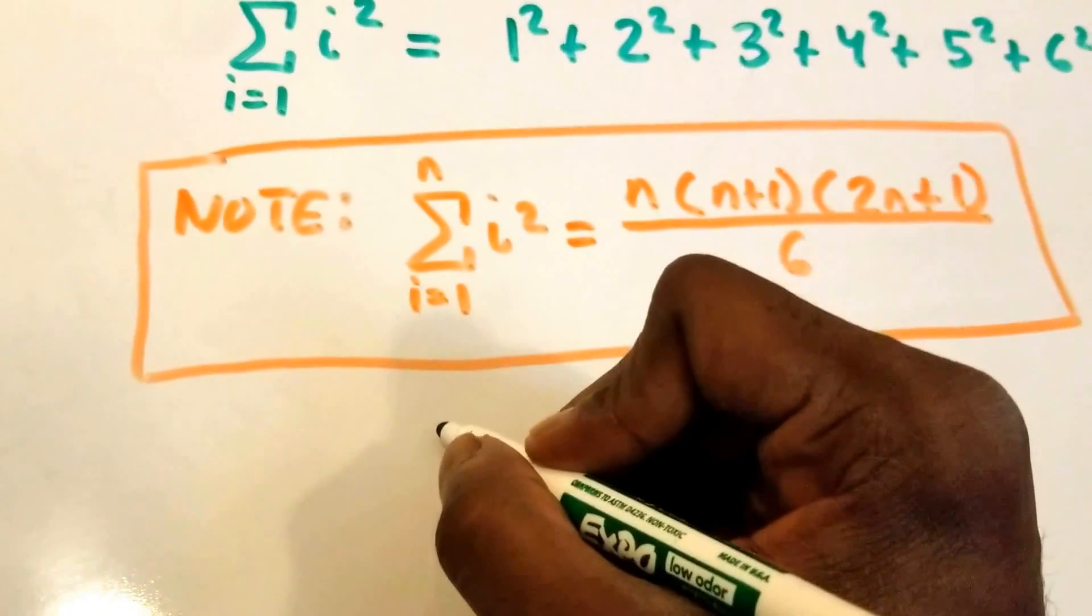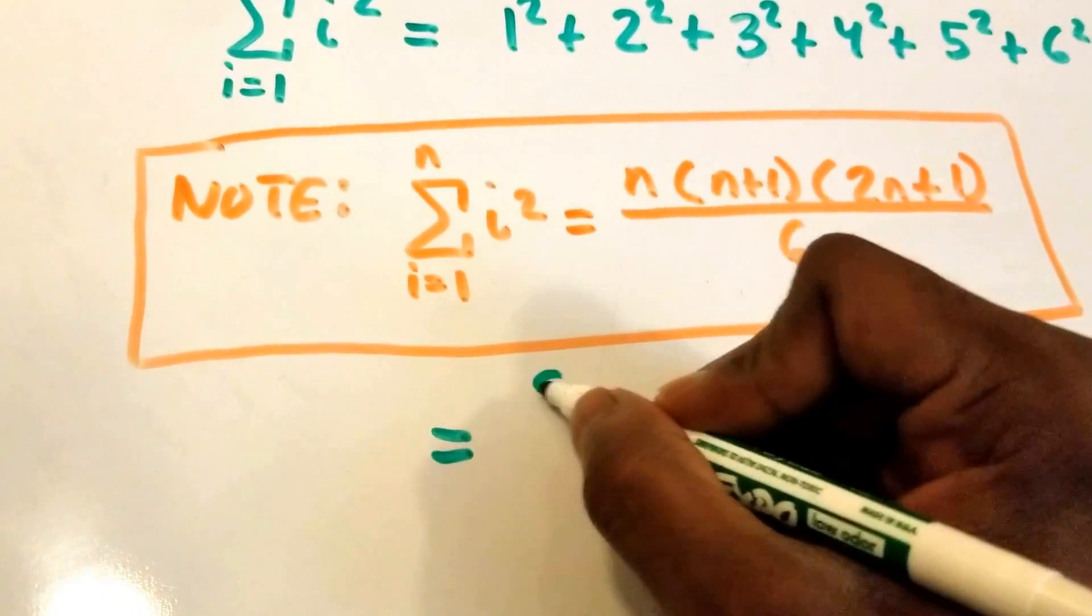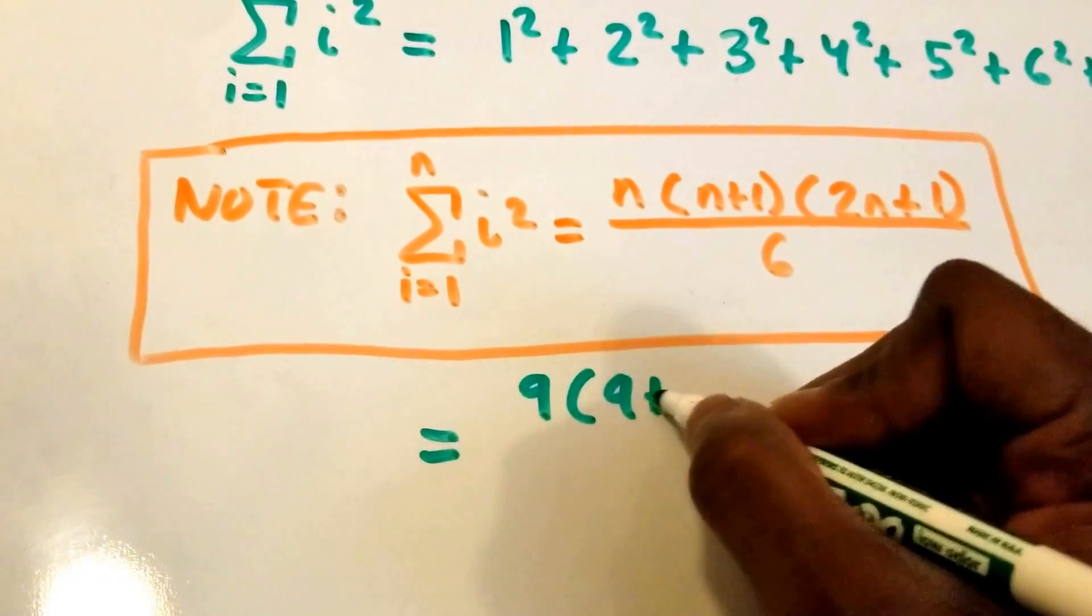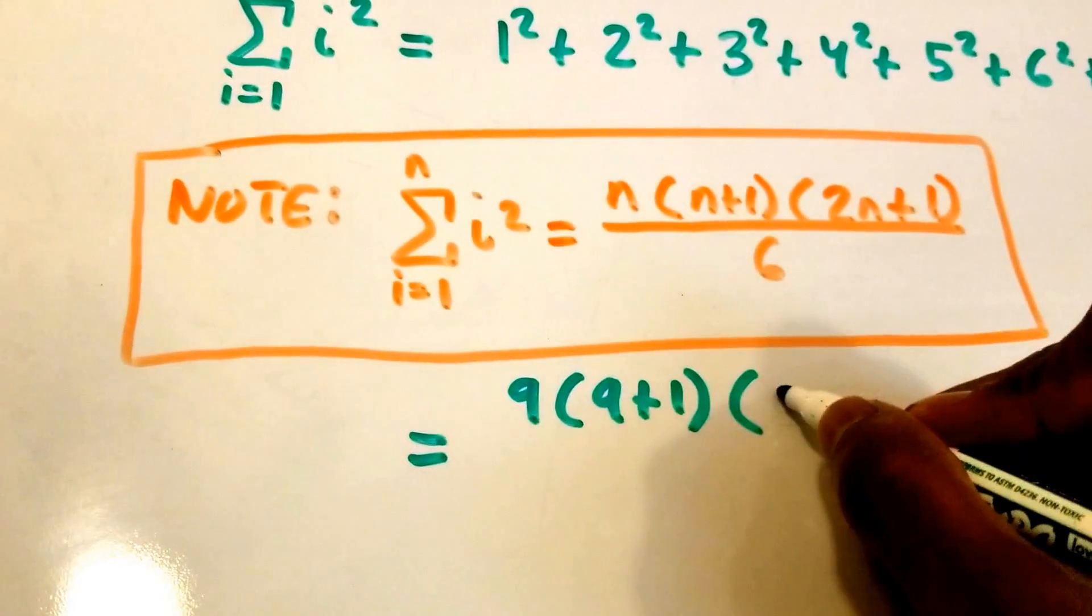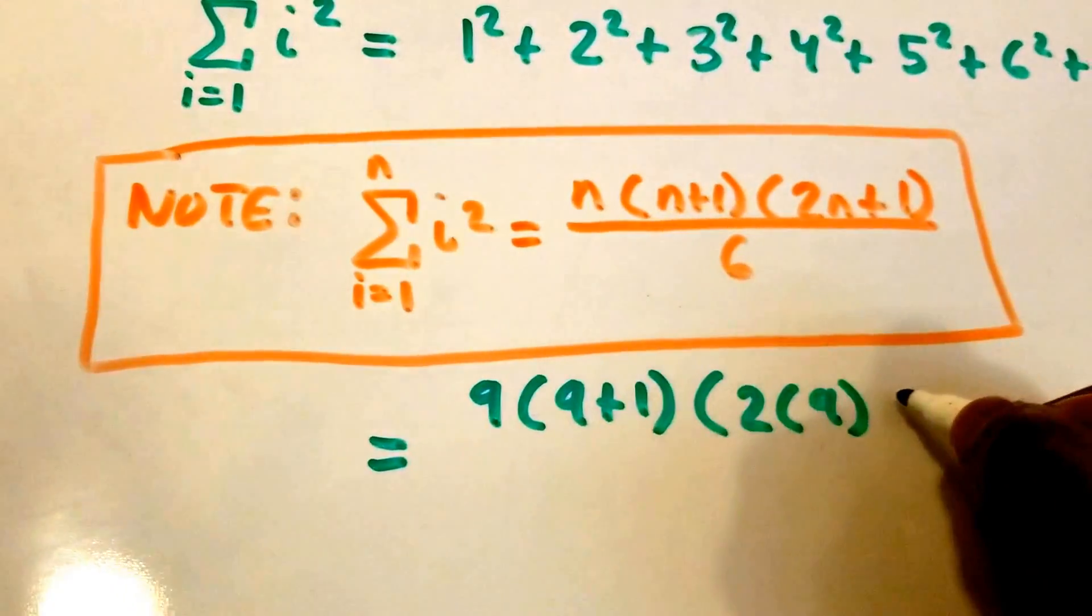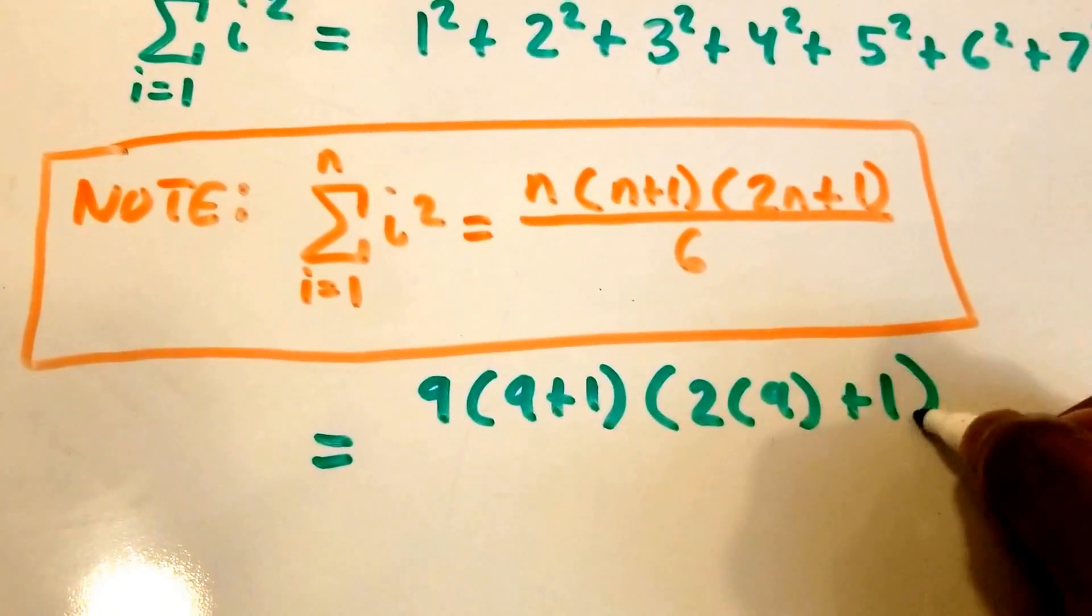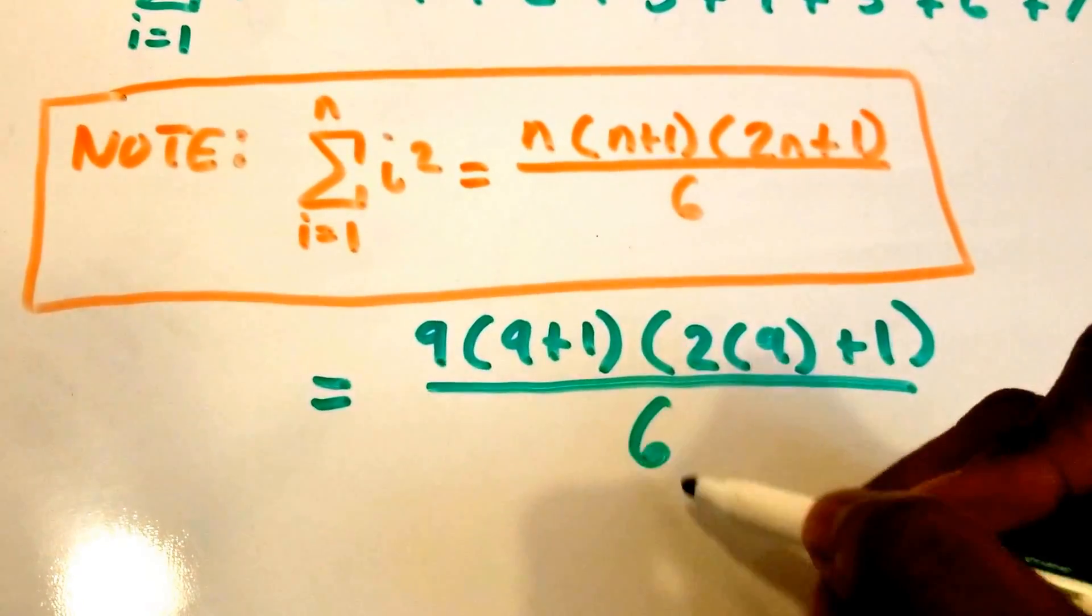All right, so what we get is 9 times 9 plus 1 times 2 times 9 plus 1, and all of this divided by 6.